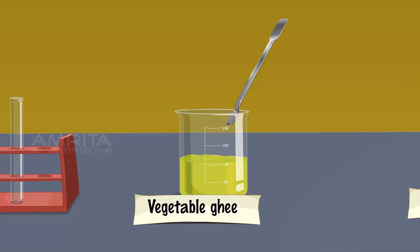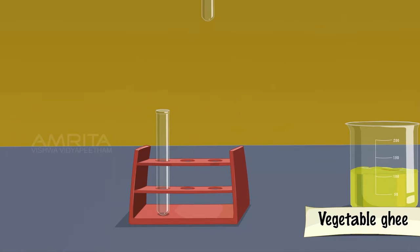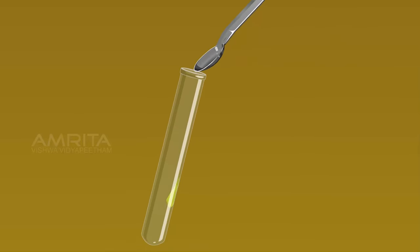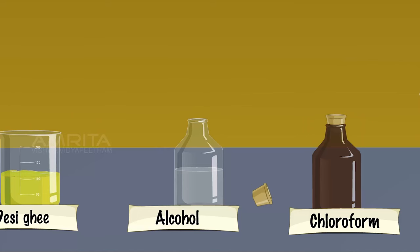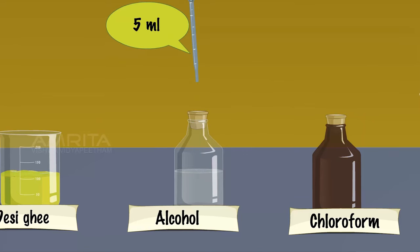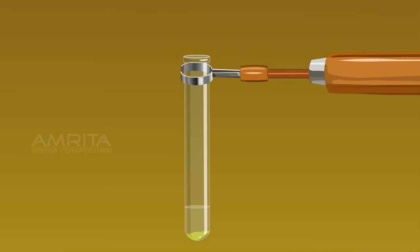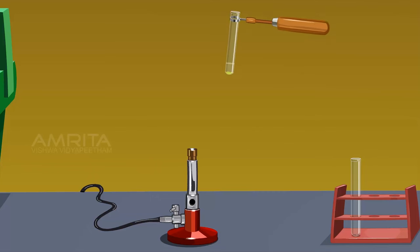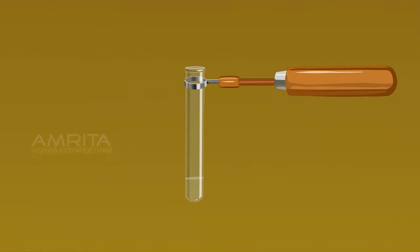Vegetable ghee forms a lower layer. Take a small amount of vegetable ghee in another test tube. Using another dropper, take about 5 ml of alcohol and add it into the test tube containing vegetable ghee. Vegetable ghee forms a lower layer. Hold the test tube with the test tube holder and heat it over the Bunsen burner. The lower layer of ghee dissolves on heating.